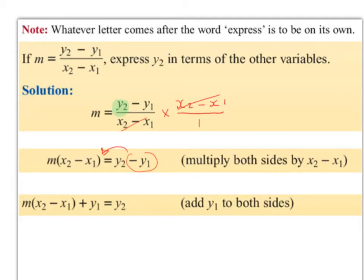The y2 is tied up inside a fraction, so we want to get rid of the fraction first. We're going to multiply both sides by (x2 minus x1) to break up the fraction — what we do to one side, we do to the other. This will cancel with the denominator and we're left with y2 minus y1 on the right, and m times (x2 minus x1) on the left.